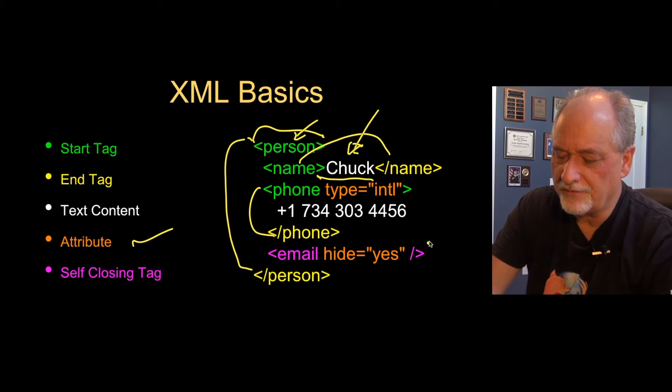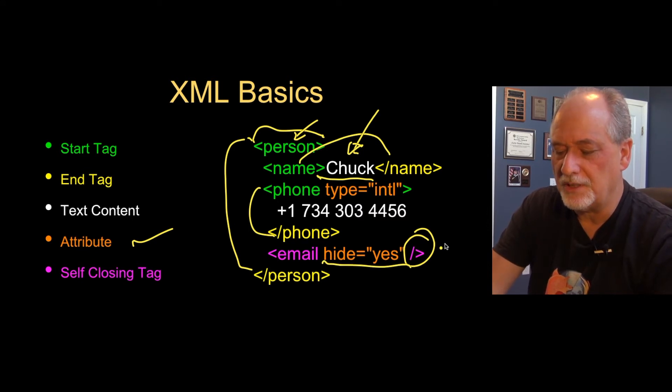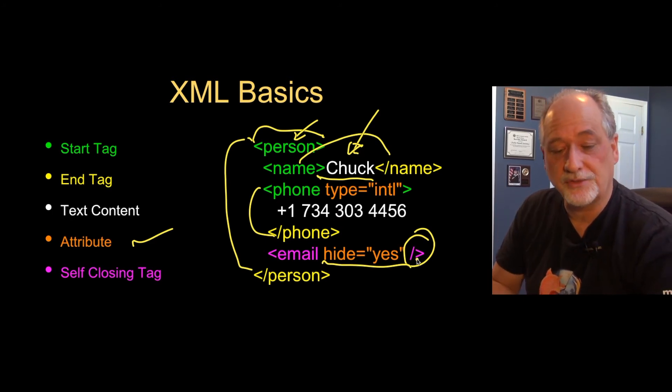Sometimes you have what's called a self-closing tag, where you don't actually have a closing tag. You have all the data that you need in the attributes, so you don't even bother putting an empty text area and a closing tag. So that is a start tag, an end tag, attribute, and then a self-closing tag. Those are some basics of XML.